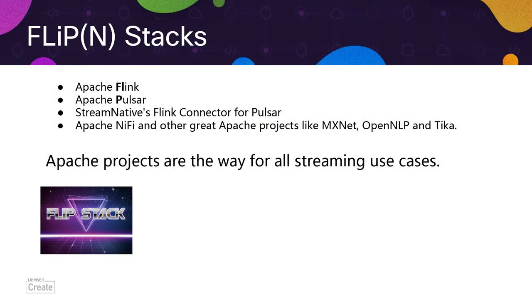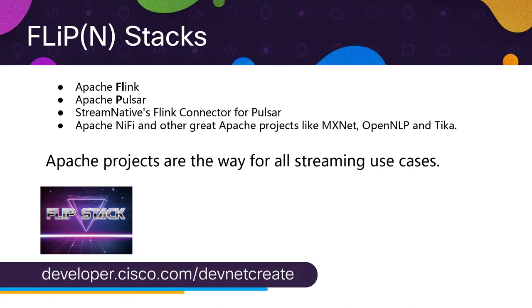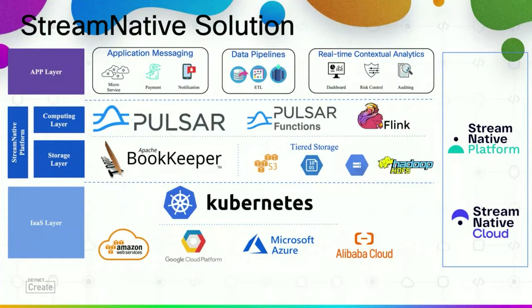Today we're going to cover one part of what's known as the FLIP stack, which is a combination of several open source software: Apache Flink, Apache Pulsar, the connection between Flink and Pulsar, and Apache NiFi. All these are great ways to do streaming, but today we're going to focus on Apache NiFi, which is a way you can grab data from things like Pulsar and connect data to Flink — one thing you can use to connect to something like Stream Native, which lets you get your data from wherever it needs to be to any other place in real time in any cloud.